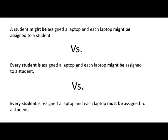That's one example. Another scenario is every student is assigned a laptop — there's no question of a student not being assigned one. In this second example, every student definitely gets a laptop, but each laptop might or might not be assigned to a student. Some laptops may exist which are not given to any student.